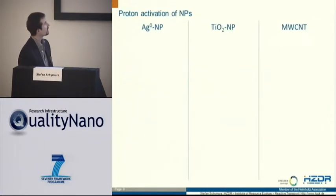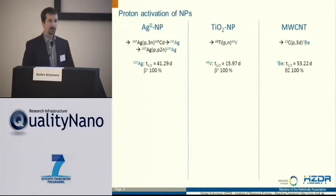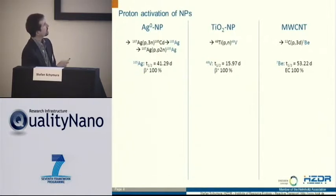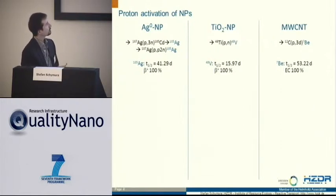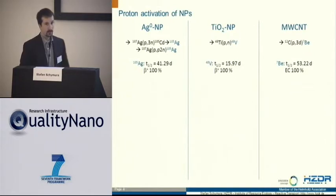Let's begin with the proton activation. First, you have to look at the particles and check if there are any useful nuclear reactions you can use. For the silver, there are actually two reactions that both lead to the buildup of silver-105. For the titanium, we can produce vanadium-48 by proton irradiation, and for the carbon, we have this exotic P3D reaction — one proton in, three deuteriums out — producing beryllium-7 isotope that is then incorporated in the CNTs.